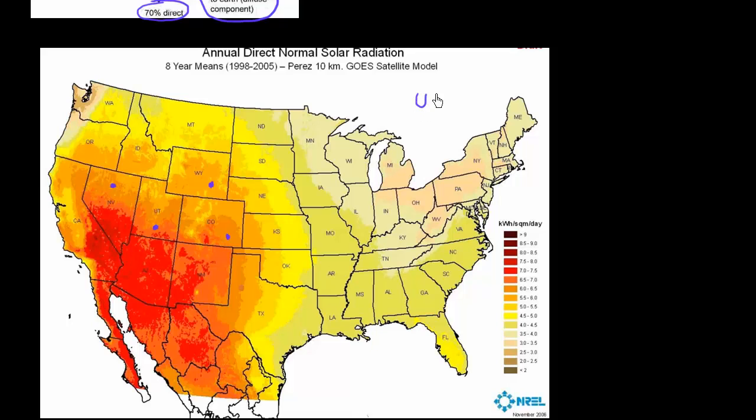But nonetheless, shown here are the DNI map of continental United States. And you can see that places such as Arizona, or places such as some parts of Texas, New Mexico, they have a very large component of this DNI.